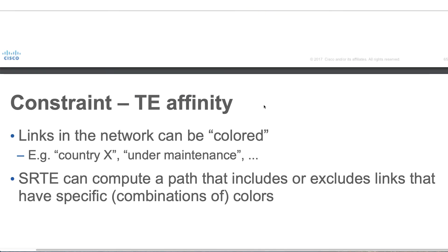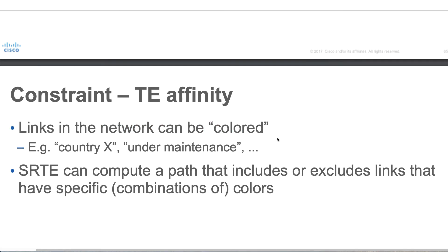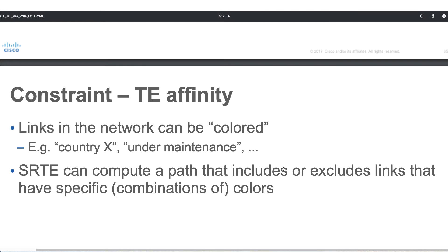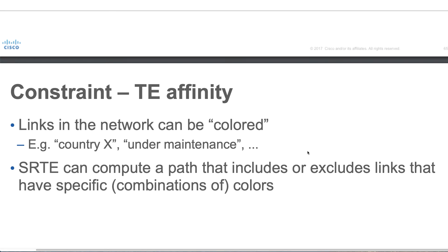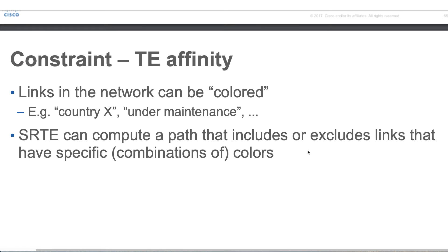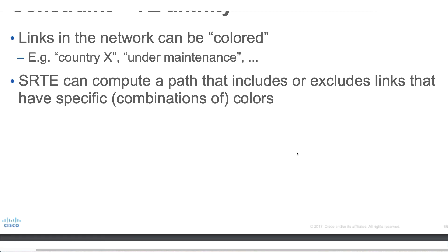We saw an example of the purple and red plane where we configured an affinity. The links in the network can be colored — we can assign a color value to a link — and then SR-TE can compute a path that includes or excludes those links, meaning those colors. So when configuring a policy, you can say pick certain links that have a certain color, or don't pick links that have a certain color.